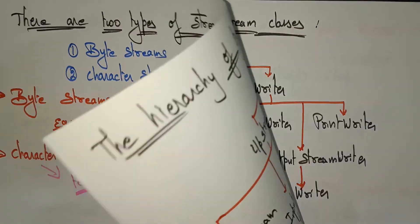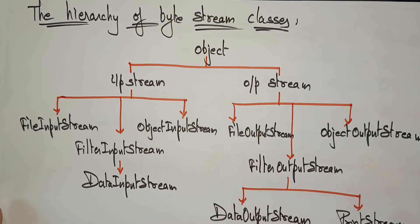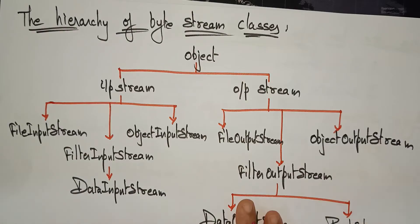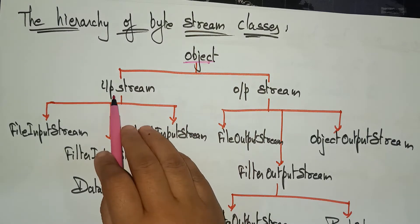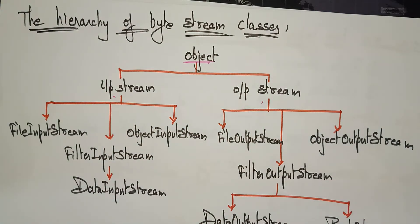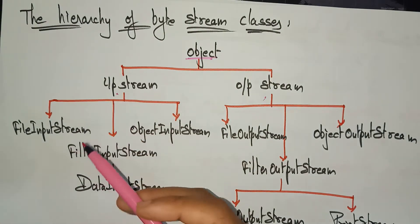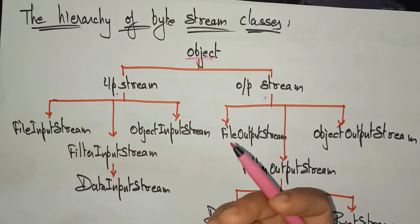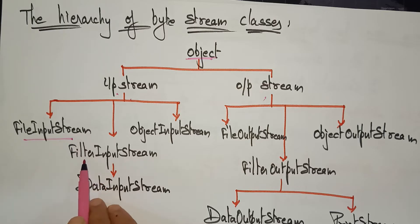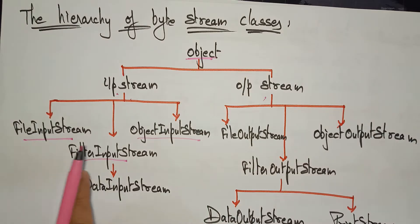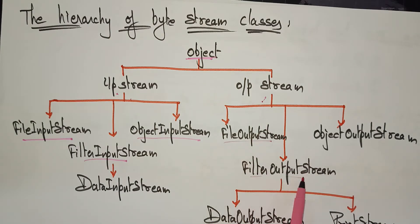Let's see the hierarchies of the byte streams and character streams. In the byte stream hierarchy, the object can be an InputStream or an OutputStream. InputStream is divided into FileInputStream, FilterInputStream, and ObjectInputStream. Similarly, OutputStream is divided into FileOutputStream, FilterOutputStream, and ObjectOutputStream.